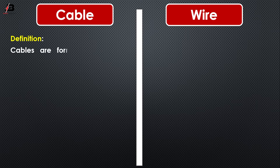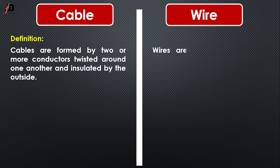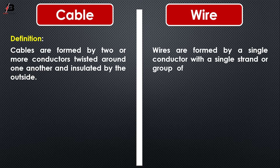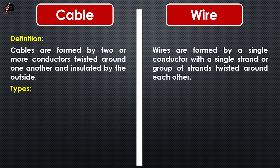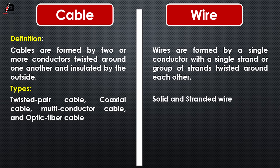Definitions: Cables are formed by two or more conductors twisted around one another and insulated on the outside, whereas Wires are formed by a single conductor with a single strand or group of strands twisted around each other. Types of Cable include Twisted Pair Cable, Coaxial Cable, Multiconductor Cable, and Optical Fiber Cable. Wire has solid and stranded types.